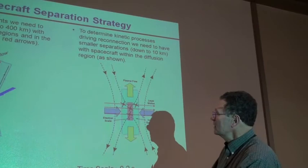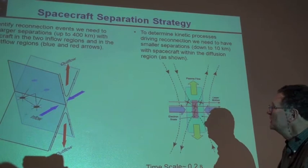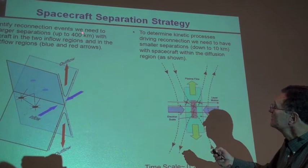For that we actually expand the size of our tetrahedron satellites, our constellation, so that we can look at the larger scale topology as seen in this slide on the left.